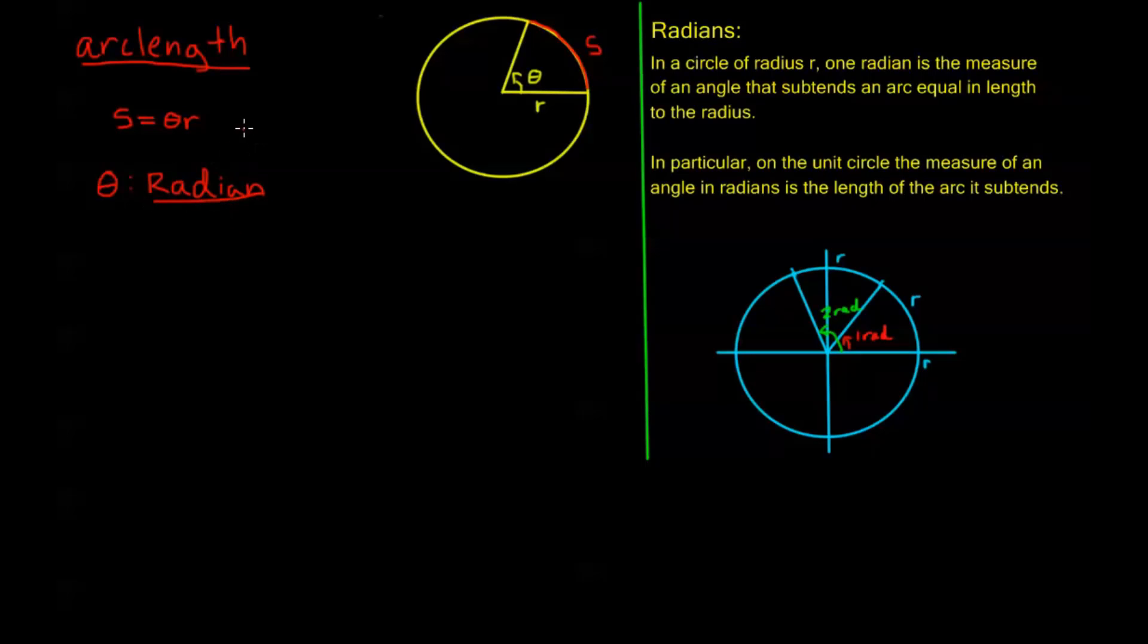If you are given a problem where theta is in degrees, before you can find the arc length, you need to use our conversion formulas from the last video to convert those degrees into radians, and then we can plug it in and we're good to go. The second thing for these, we'll always be looking at a theta for these formulas that's between 0 and 2 pi.